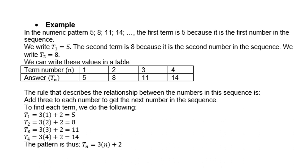And again, you'll notice that 8 minus 5 is 3, 11 minus 8 is 3, 14 minus 11 is 3. So there is a common difference of 3. The rule that describes the relationship between the numbers in the sequence is add 3 to each number to get the next term. So you look at term 1: 3 times 1 plus 2, because 3 times 1 is 3, but you need to add 2 to give you the 5. Term 2 is 3 times 2 is 6, but you need to add 2 to give you the 8. 3 times 3 is 9 plus 2 gives you term 3, which is 11. And term 4: 3 times 4 plus 2 is 14. So therefore the pattern is Tn equals 3n plus 2.